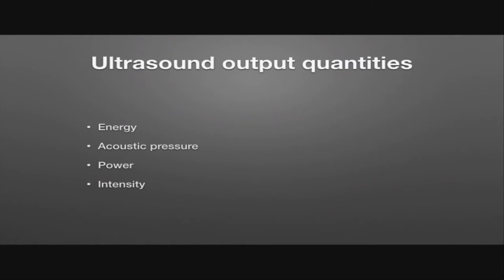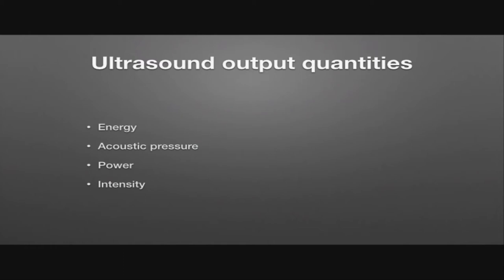It's the ultrasound output quantities that are going to be related to the bio-effects we're talking about. There are different ways of quantifying how much energy goes into the body with ultrasound. Energy is the total work done. Acoustic pressure is the compression of the sound wave. That leads to power, which is the energy per second that is transferred, and intensity — probably the most useful parameter — which is the power per unit area. So intensity gives us an idea of both the power for a given volume of tissue as well as that transfer per second.